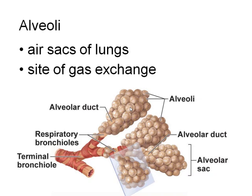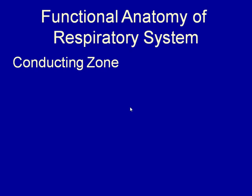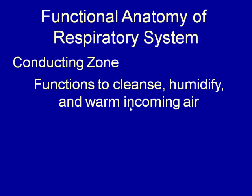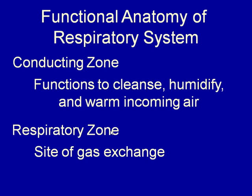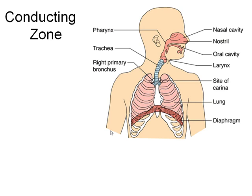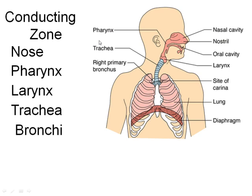Functionally, the respiratory system is divided into two zones. The conducting zone — the nose, pharynx, larynx, trachea, and bronchi — cleanses, humidifies, and warms incoming air. The respiratory zone — the tiny bronchioles, alveolar ducts, and alveoli — is where gas exchange actually occurs. These microscopic structures must remain open for gases to be exchanged.